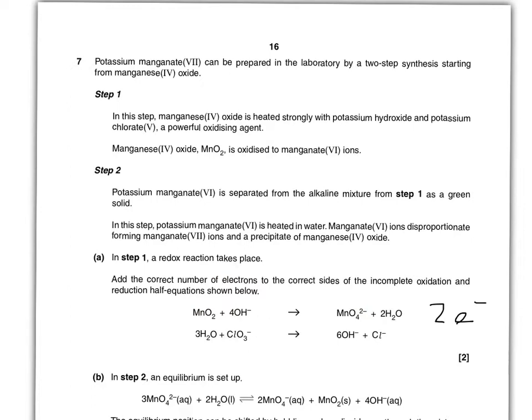Same applies to the bottom one. Minus 7 on the left-hand side and only at the moment minus 1, so we need to balance that up by adding 6 electrons. And we are done.